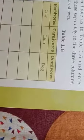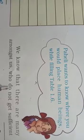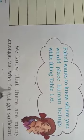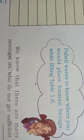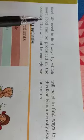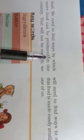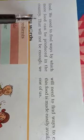The first question wants to know where you would place human beings while filling table 1.6. You should know that humans are kept in the omnivores group. We know that there are many among us who do not get sufficient food. We need to find ways by which more food can be produced in the country.